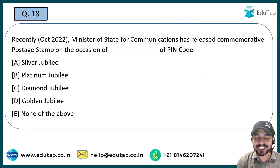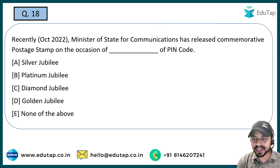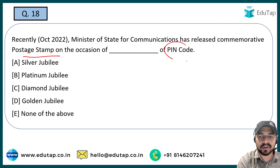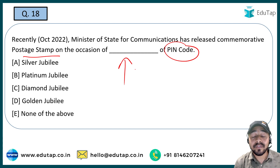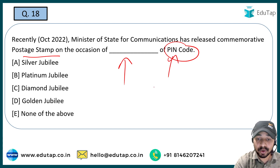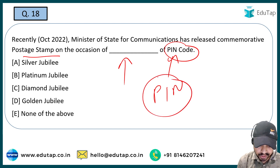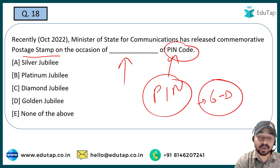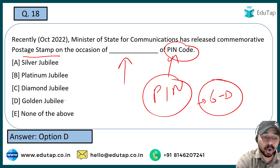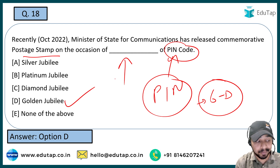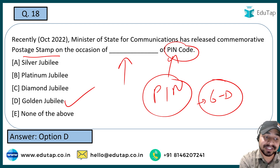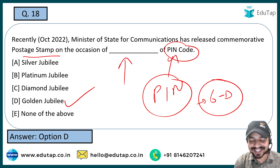The next question: the Minister of State for Communication has released a commemorative postal stamp on the occasion of the golden jubilee of the PIN Code. PIN Code stands for Postal Index Number — it is a six-digit numeric code. The right answer is Golden Jubilee. Along with the right answer, you should also know this extra information.